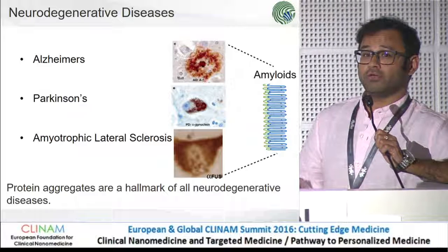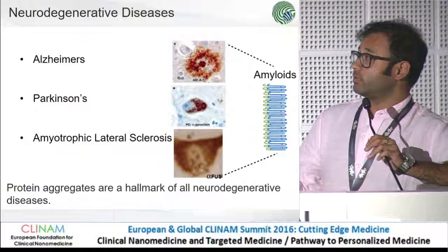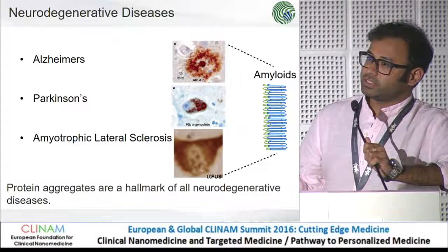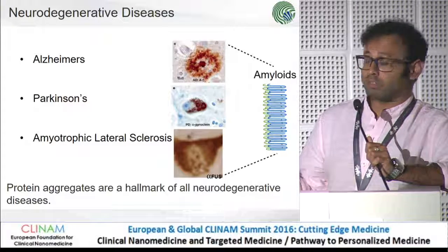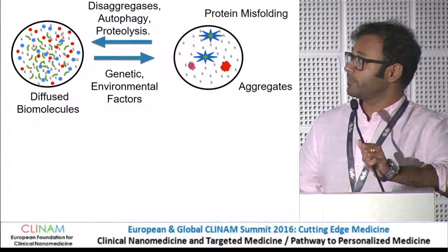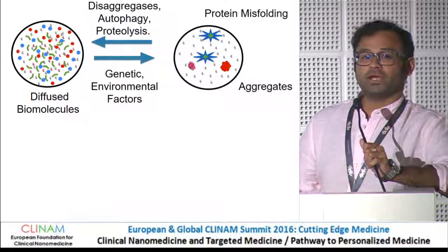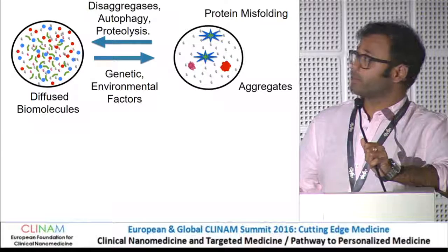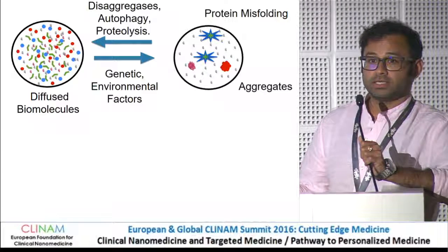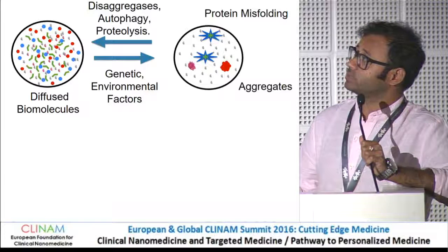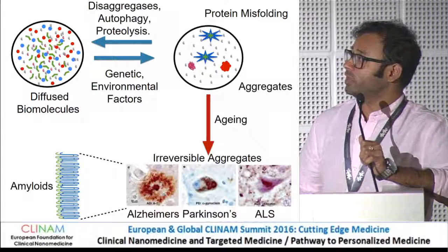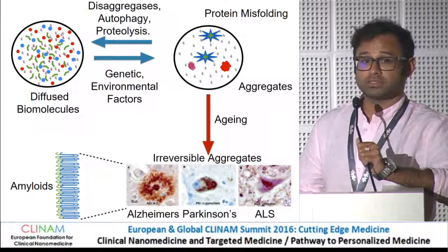One characteristic of these protein aggregates is that they are amyloids — meaning it's a characteristic way of aggregation where once the protein unfolds, it forms these kind of structures, which is like cross-beta sheet, represented here in a very simplistic way. The current model for how this happens: these are the diffused biomolecules, each representing a protein. Under some genetic and environmental factors, they tend to form aggregates due to protein misfolding, which is normally taken care of by the cell with disaggregases, autophagy, or proteolysis. But as we age, this machinery becomes weaker, and we end up with irreversible aggregates in the form of amyloids, which gives us these diseases.